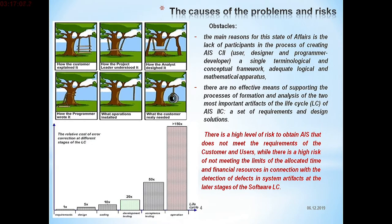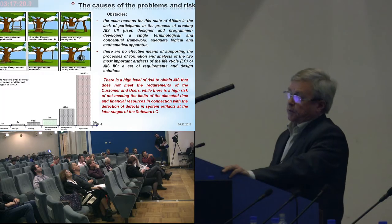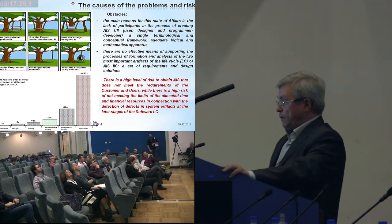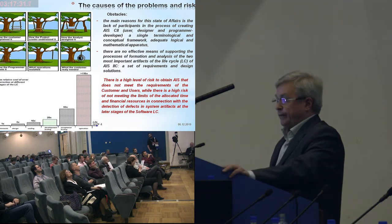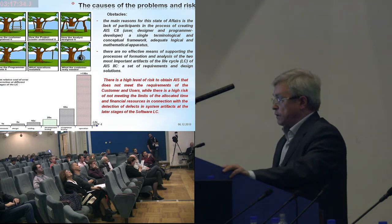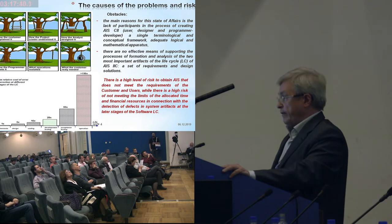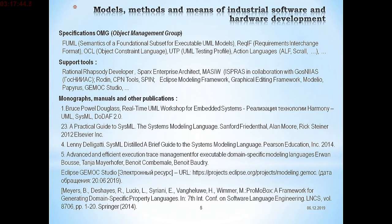You can see the picture at the bottom which shows that the cost to fix deficiencies goes exponentially up depending on the stage. At the stage of use of the system, if a deficiency is identified in the requirements, the cost of fixing increases hundreds of times.